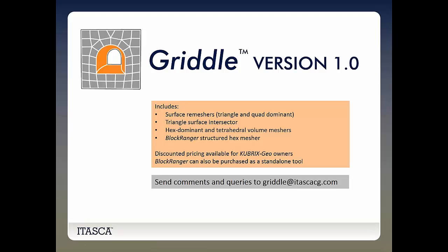The three components are: a surface remesher, a triangle surface intersector, and a hex-dominant and tetrahedral volume mesher. The surface remeshers include triangle and quad-dominant surface remeshers. Griddle also includes BlockRanger structured hex mesher in version 1.2. Some of you may be familiar with version 1.1. If you already own Kubrix Geo, discounted pricing is available for Griddle.